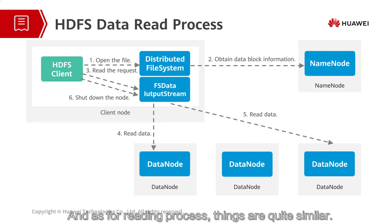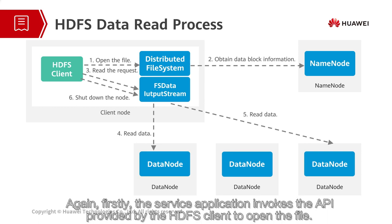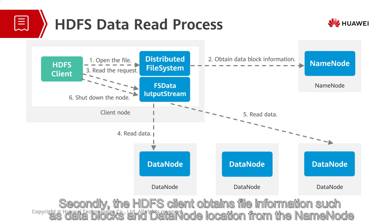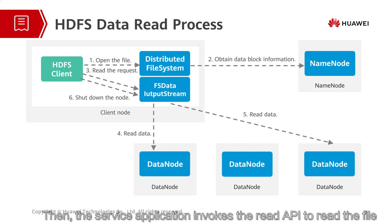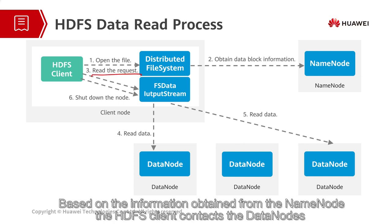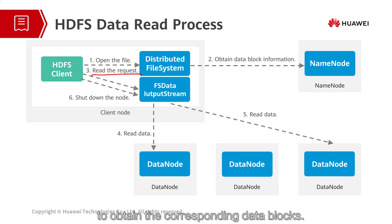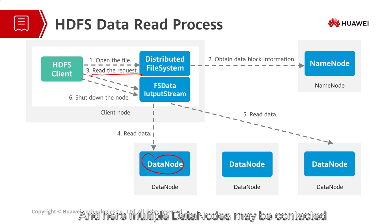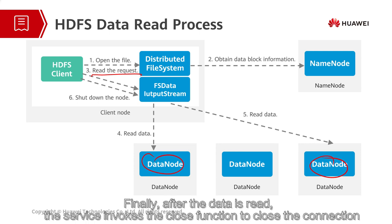As for the reading process, things are quite similar. First, the service application invokes the API provided by the HDFS client to open the file. Second, the HDFS client obtains file information such as data blocks and data node location from the name node. Then, the service application invokes the read API to read the file. Based on the information obtained from the name node, the HDFS client contacts the data nodes to obtain the corresponding data blocks, and multiple data nodes may be contacted. Finally, after the data is read, the service invokes the close function to close the connection.